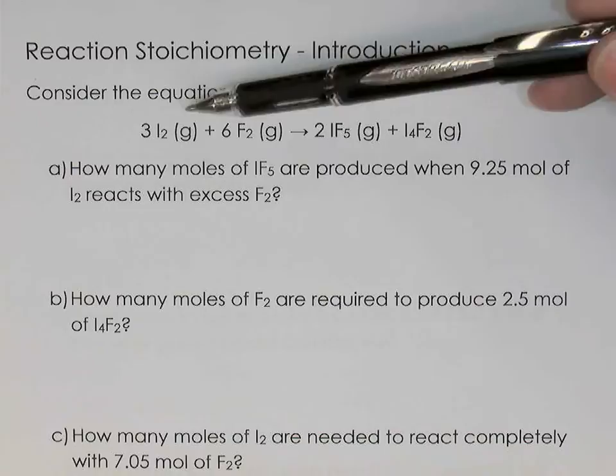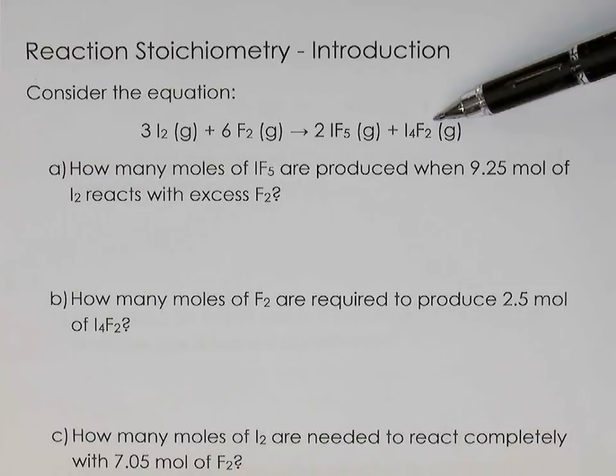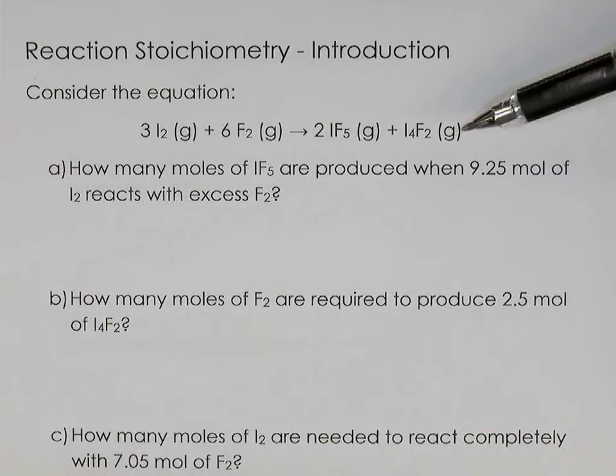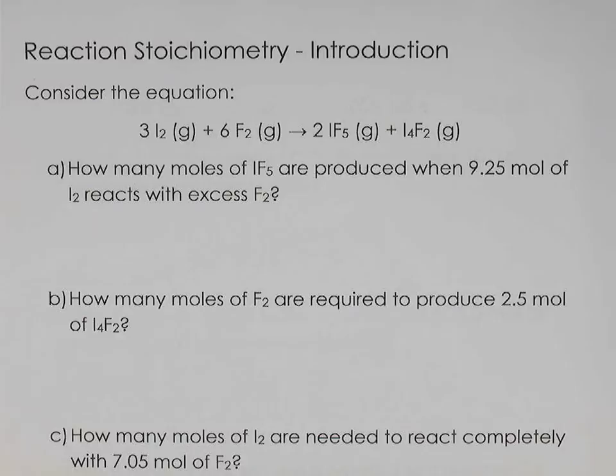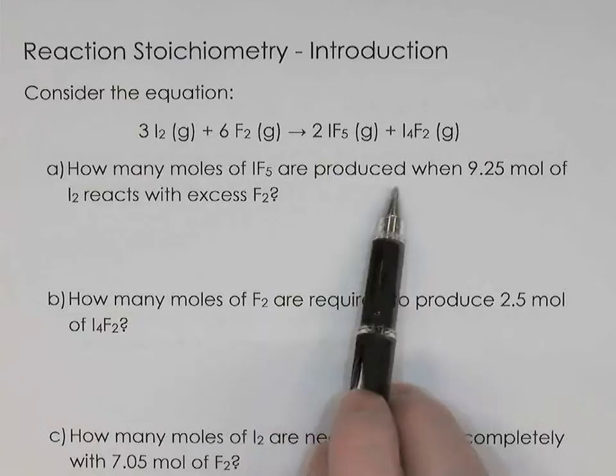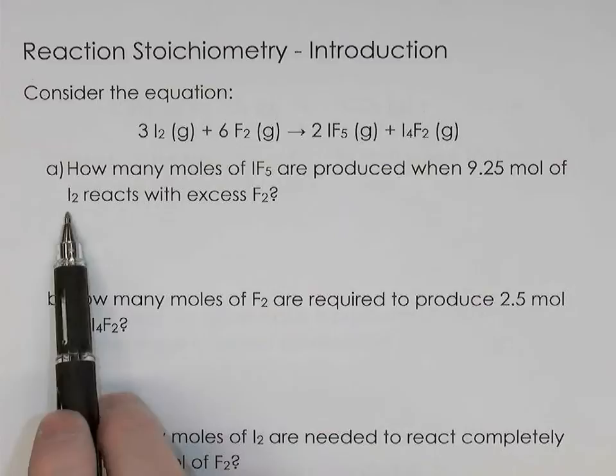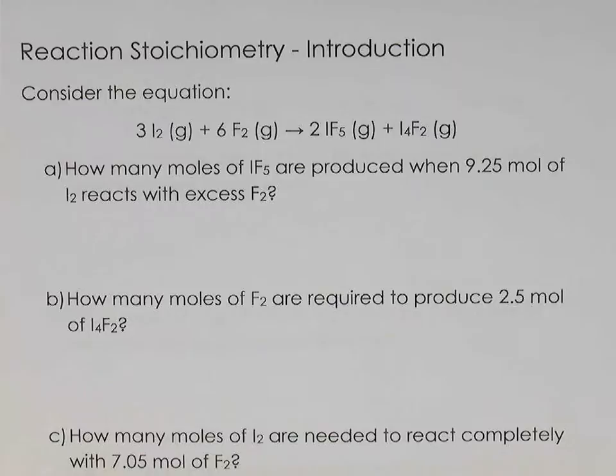We've got a chemical reaction here — a complicated-looking one. Iodine reacting with fluorine is creating two different compounds: iodine pentafluoride (IF5) and tetraiodine difluoride (I4F2) gases. The first question asks: how many moles of IF5 would be produced if 9.25 moles of iodine reacts with excess fluorine? Another way to say that: how much IF5 can you produce from 9.25 moles of iodine, assuming there's excess fluorine.